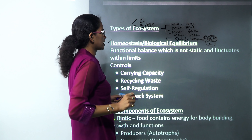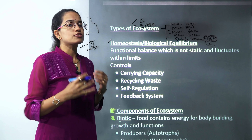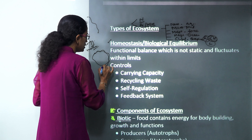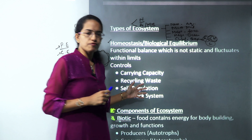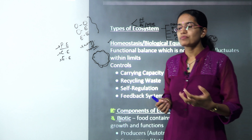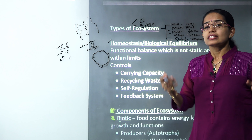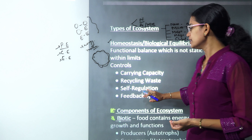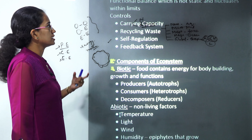Homeostasis or biological equilibrium talks about maintaining balance. This balance is not static — it fluctuates but usually within limits. Homeostasis is controlled by four factors: carrying capacity (the amount of individuals a place can sustain), recycling of waste material, self-regulation in the system, and feedback system. There could be a direct exam question on which of the following is or is not a factor affecting homeostasis.